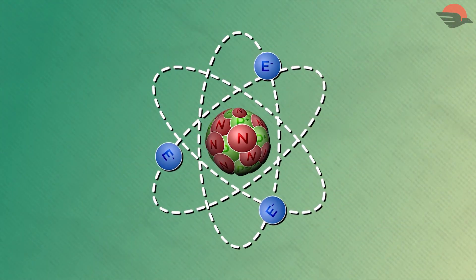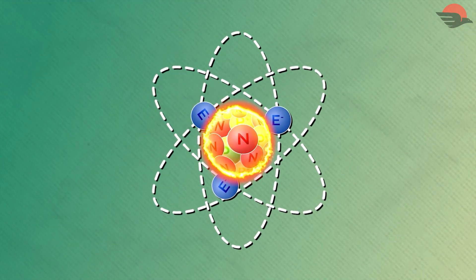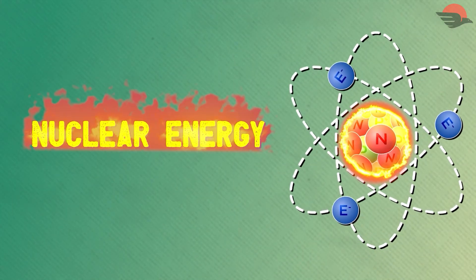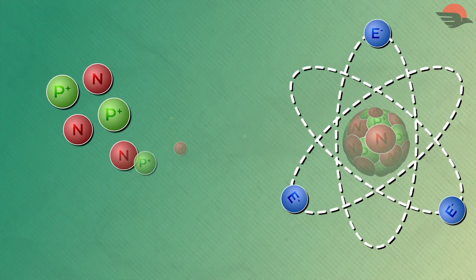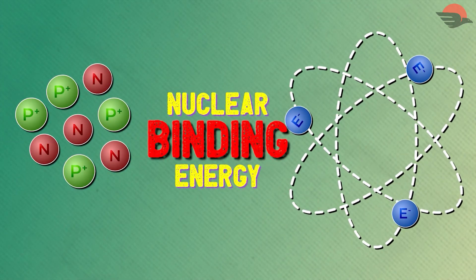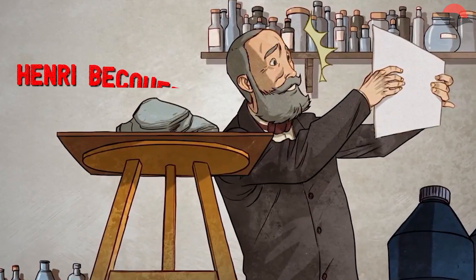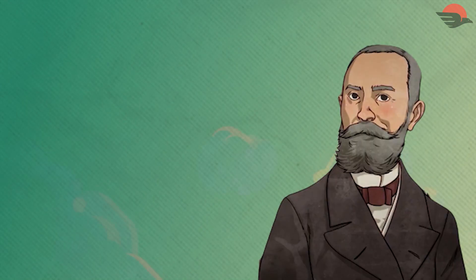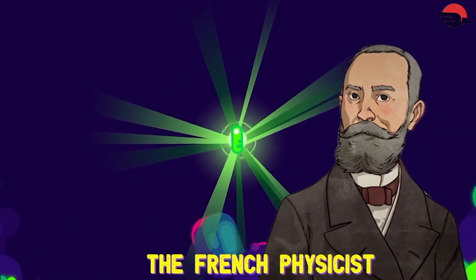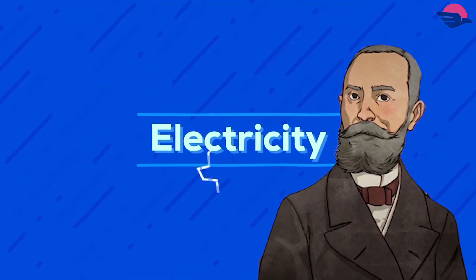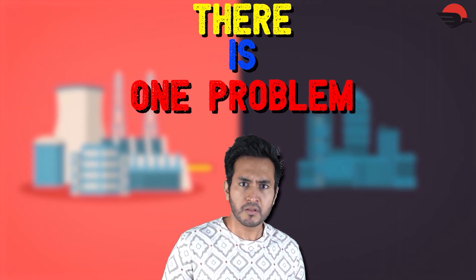So now back to the atom, which is one of the core nuclear energy. The energy required to separate this core is called nuclear binding energy — which is what we associate with Henry Becquerel, the French physicist, who also said that nuclear energy can be converted into electricity. But there is one problem.